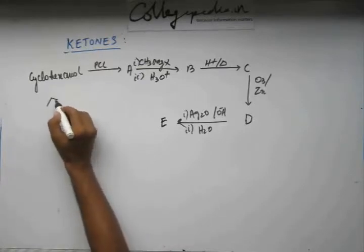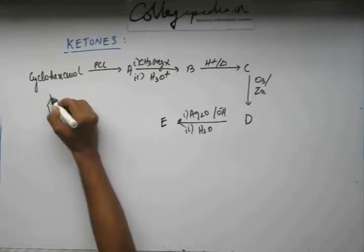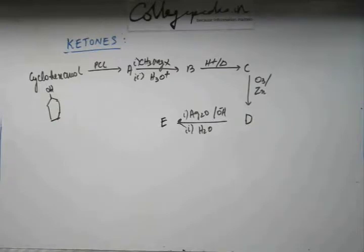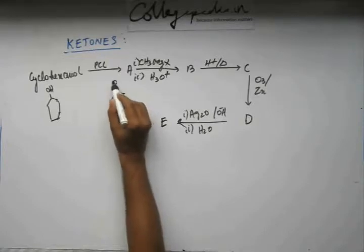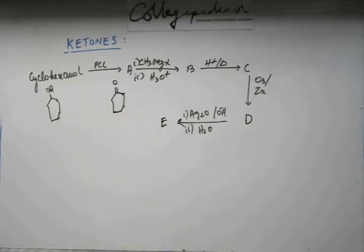So, you are starting from cyclohexanol and if you have a 2 degree alcohol, PCC gives you ketone. If you have a 1 degree alcohol, PCC gives you aldehyde. You have a steady dose. So, A would be cyclohexanol, very easy, right?